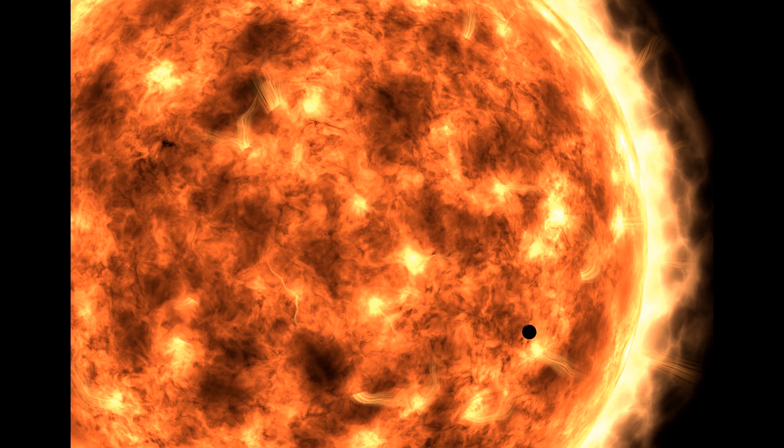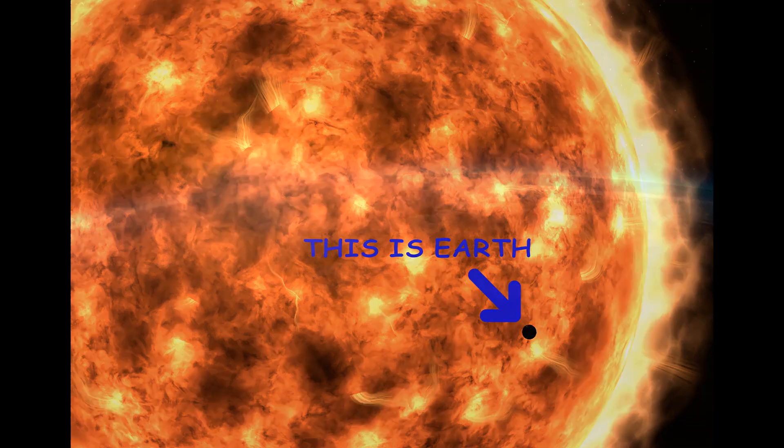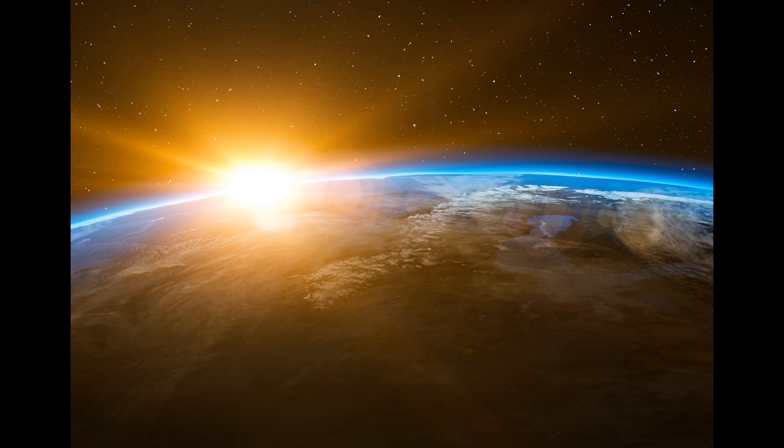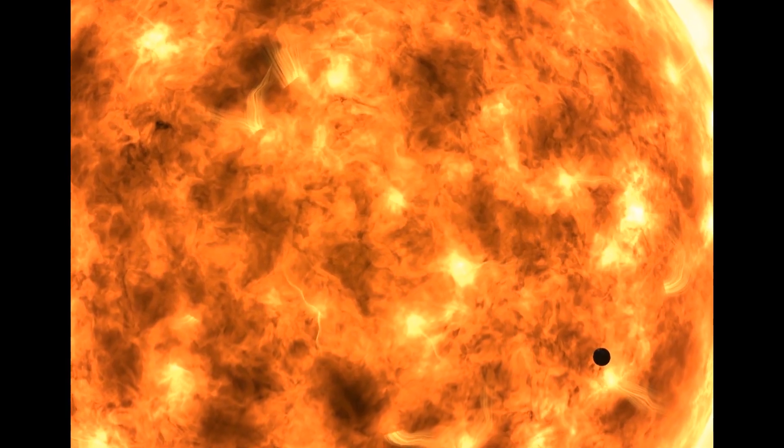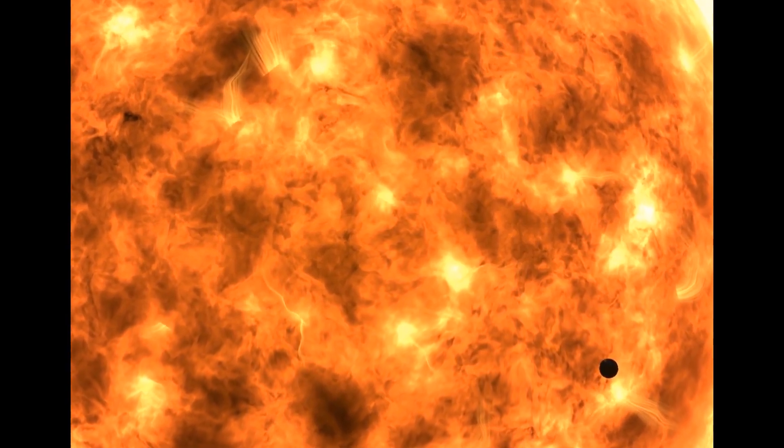The light coming from the Sun takes 8 minutes and 20 seconds to reach Earth. This time, it would take almost 122 hours to reach Earth. That's nearly 5 Earth days. So this time, the sunlight what you see would be 5 Earth days older.